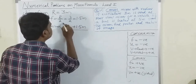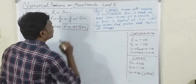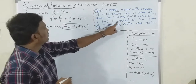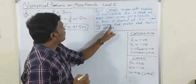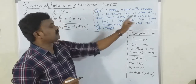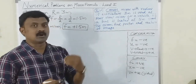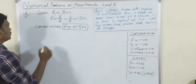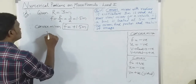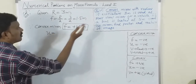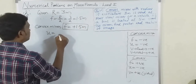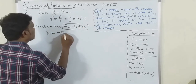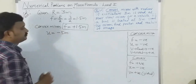The bus is the object located at 5 meters. Since u is always negative, u = -5 meters. We need to find v using the mirror formula.